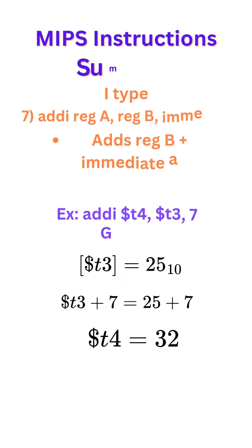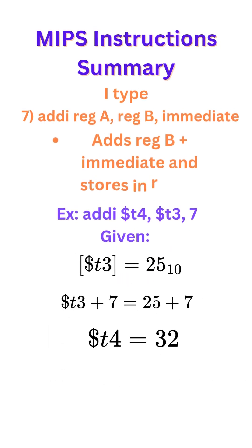Next, I-type addi register A, register B, immediate. This instruction basically adds register B plus the immediate value and stores the result in register A.